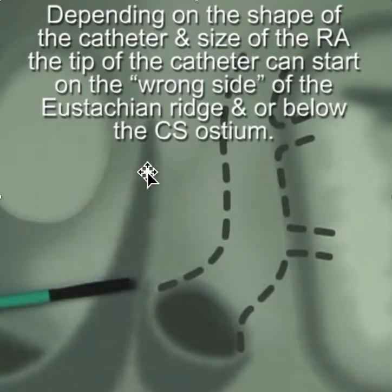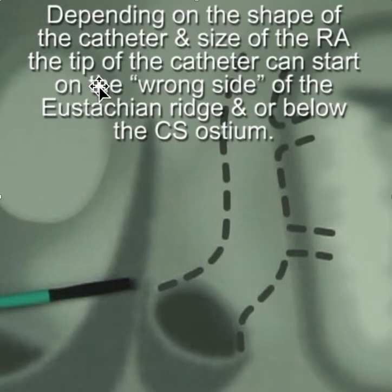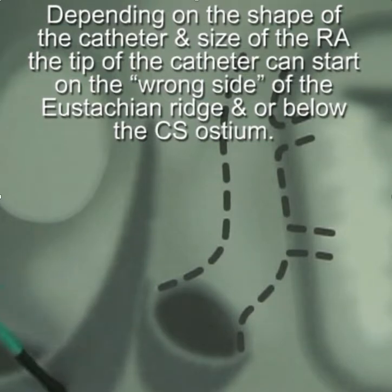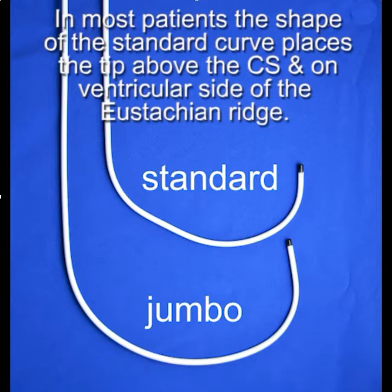How this works depends on the shape of the catheter and size of the right atrium. If the shape is not proper, the tip of the catheter can start on the wrong side of the eustachian ridge and below the os of the coronary sinus, and when you apply counterclockwise torque, it just takes it away from the CS.